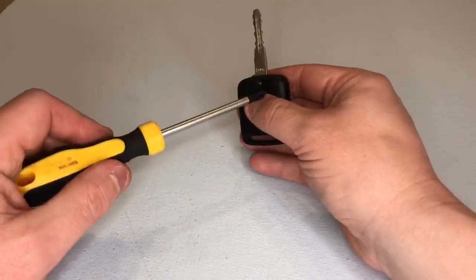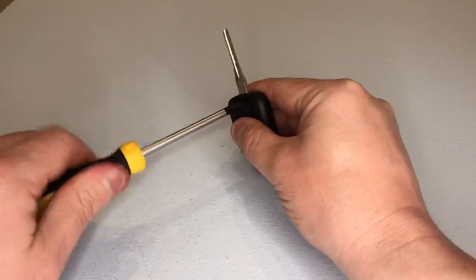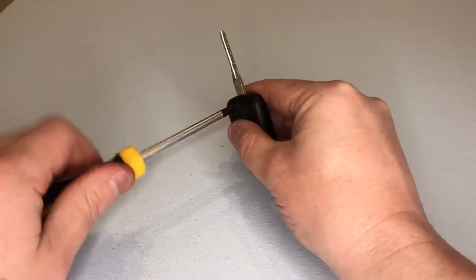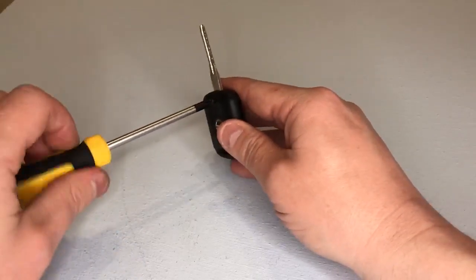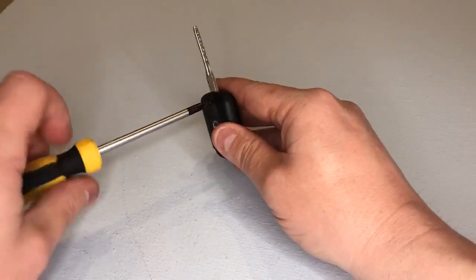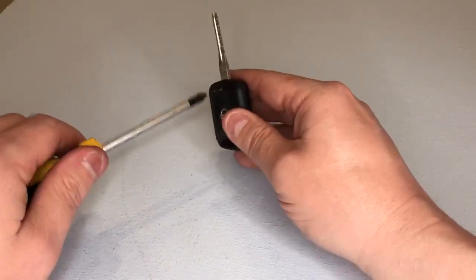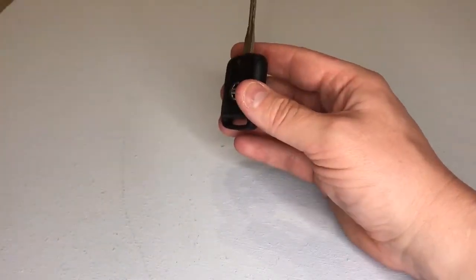So let's get our screwdriver and just very gently remove the screw from the top of the key fob. Like that.